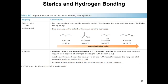Here's a table that summarizes and compares the physical properties of alcohols, ethers, and epoxides. The stronger the intermolecular forces, the higher the boiling point or melting point, so alcohols have higher boiling point and melting point compared to ethers and epoxides. Diethyl ether has a lower boiling point compared to the alcohols, and more sterically hindered alcohols have lower boiling points compared to secondary or primary alcohols.